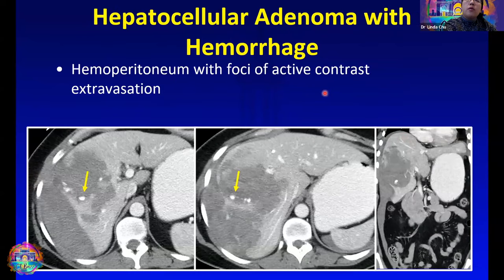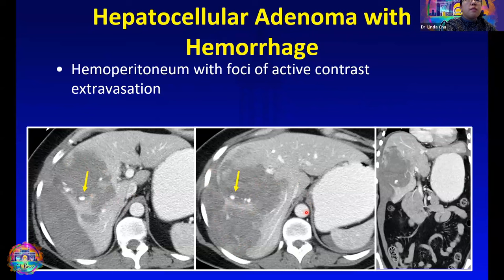Adenomas can also bleed. This is a case where there is a hyperdense mass within the right hepatic lobe with foci of active contrast extravasation, a large hematoma, and also hemoperitoneum. When we see a large bleeding mass, the top of the differential would be adenoma or HCC.